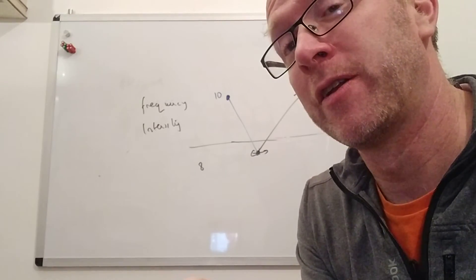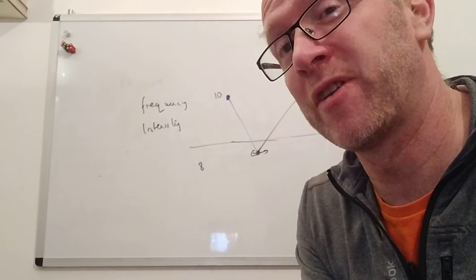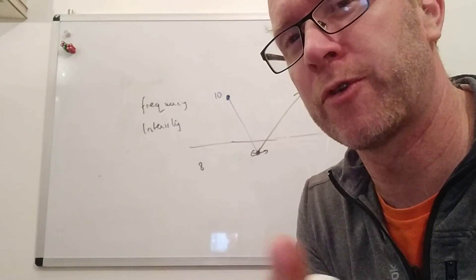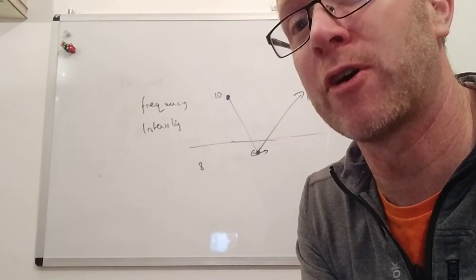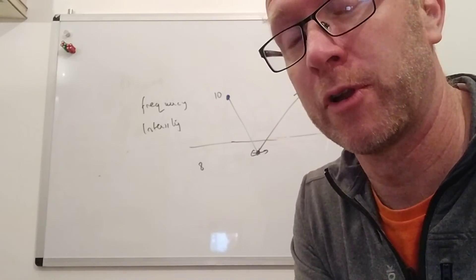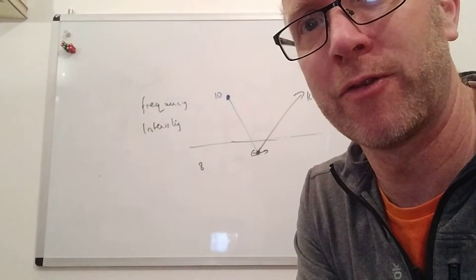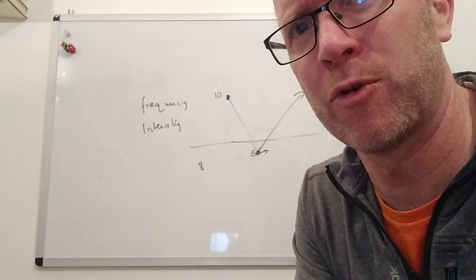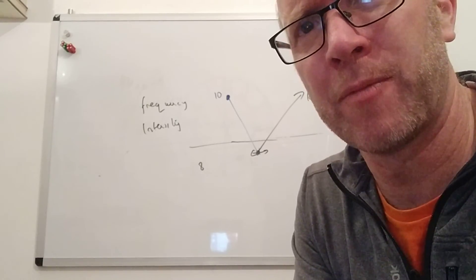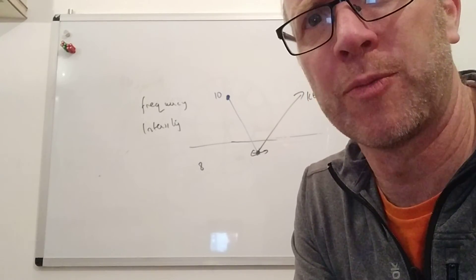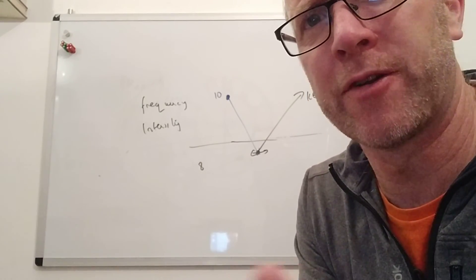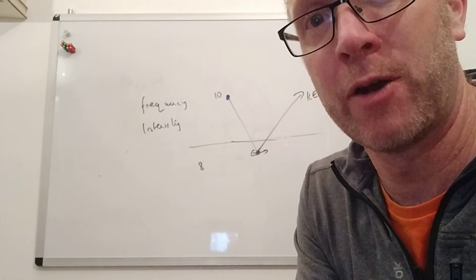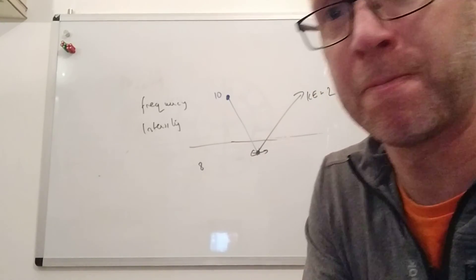The electrons emitted can also constitute a current, so the current would be proportional to the intensity of the light — we'll come back to that. Above the threshold frequency, the intensity determines how many electrons are emitted. I hope that makes sense; there's a video clip later which will explain it a bit better.